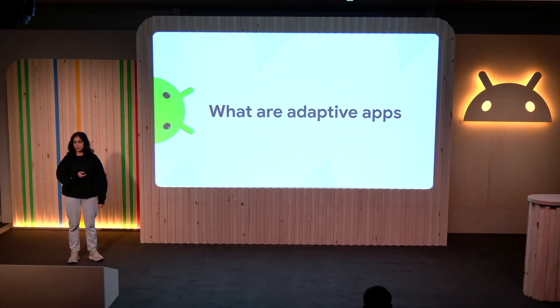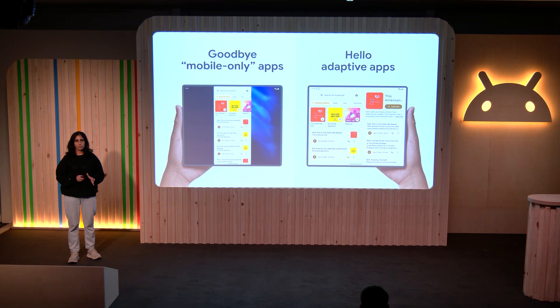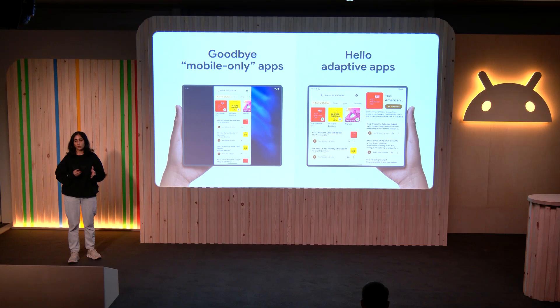Let's dive into what it means to be adaptive. Simply put, being adaptive is really about saying goodbye to the mobile-only mindset. Apps have traditionally been built for mobile form factors, and because of this, there's been constraints on resizability and orientation that make apps think they're going to be running in a small portrait window. So what we see today is most apps are built to be portrait and likely cannot support various screen sizes or orientations.